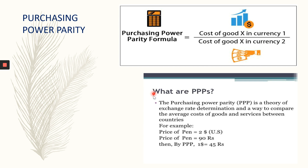Let me explain purchasing power parity with an example. Suppose you take the price of a pen. In USA, a pen costs two dollars. The same pen in India is 90 rupees. From this, you calculate: cost of good X in currency 1 divided by cost of good X in currency 2 — that is 90 divided by 2 — equals rupees 45. So by this method, the purchasing power parity is $1 equal to 45 rupees.